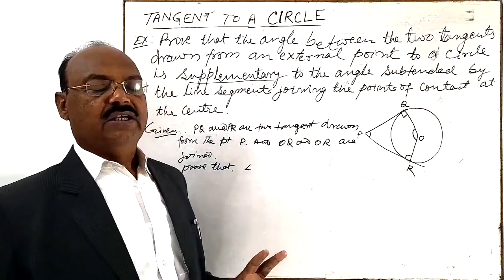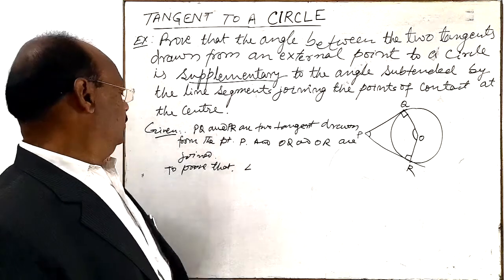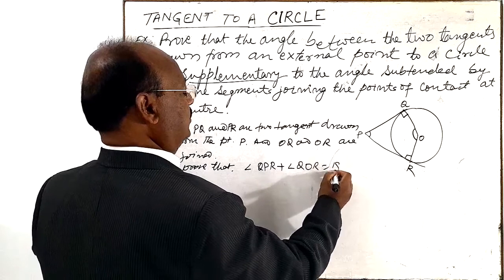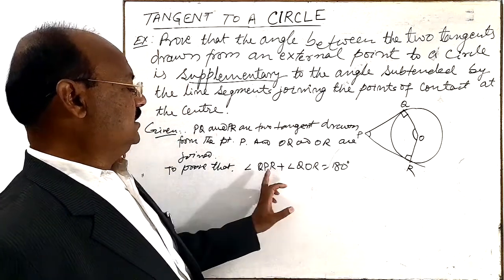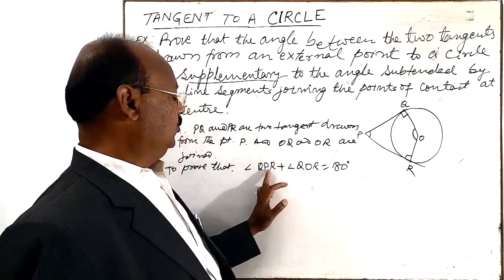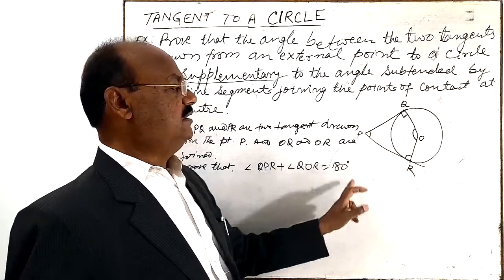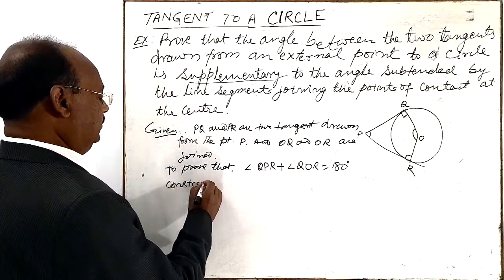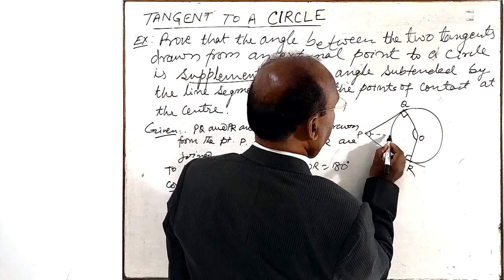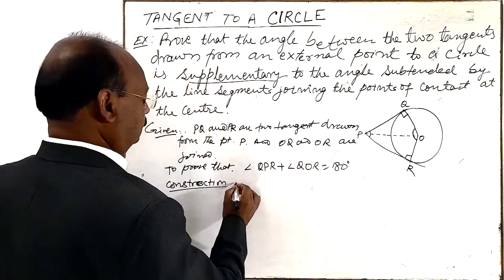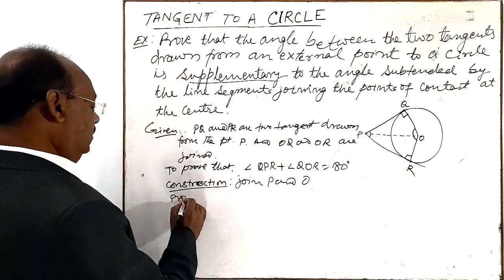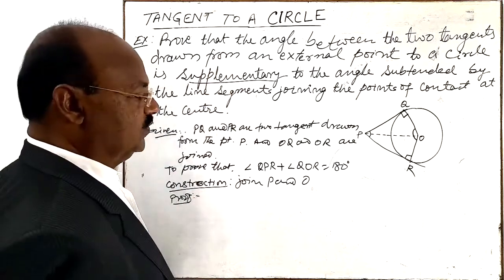Two angles are supplementary when their sum is 180 degrees. So here we have to prove that angle QPR plus angle QOR is equal to 180 degrees, meaning these two angles are supplementary. For construction, we will join P and O.